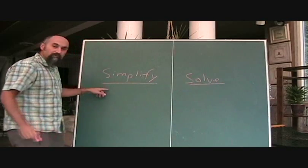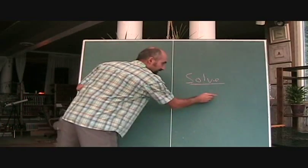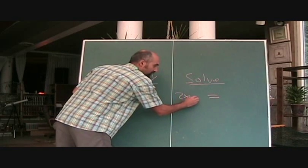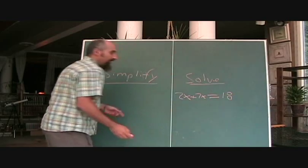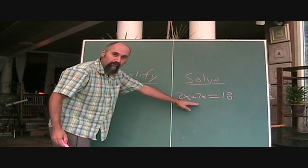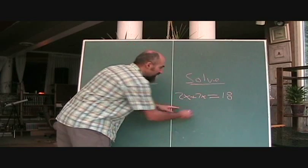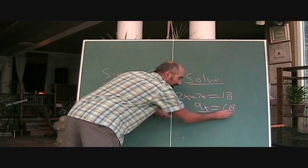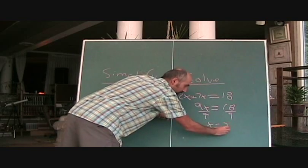Now the difference between simplify and solve is with solve, in the question there's an equal sign. So for example, they would ask you something like 2x plus 7x equals 18, and you would have to solve for the variable x. So 2x plus 7x is the same thing as 2 apples plus 7 apples is 9 apples. 9x equals 18, and then you divide by 9. So x equals 2.